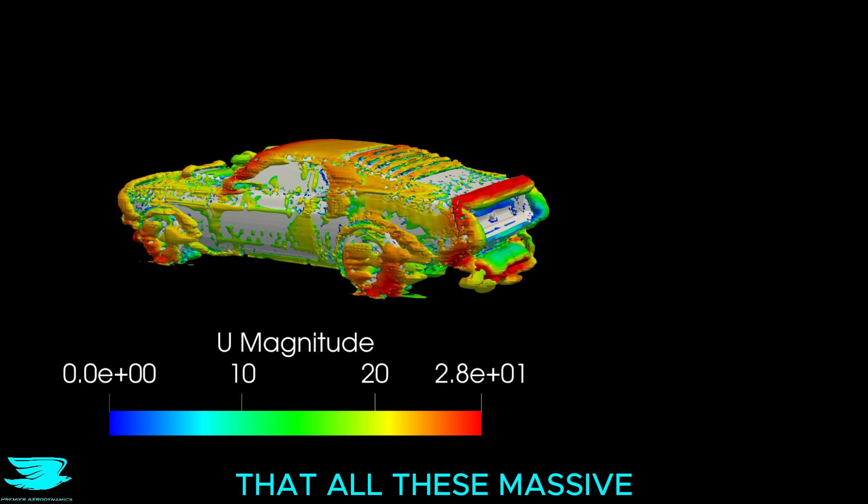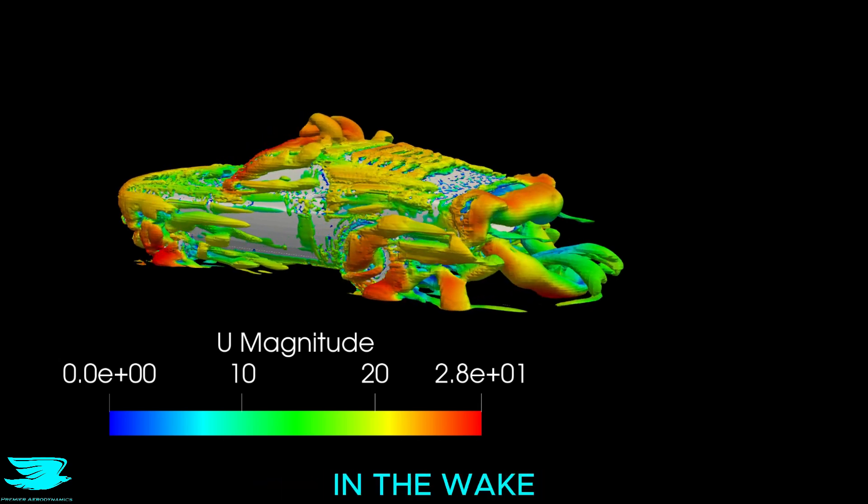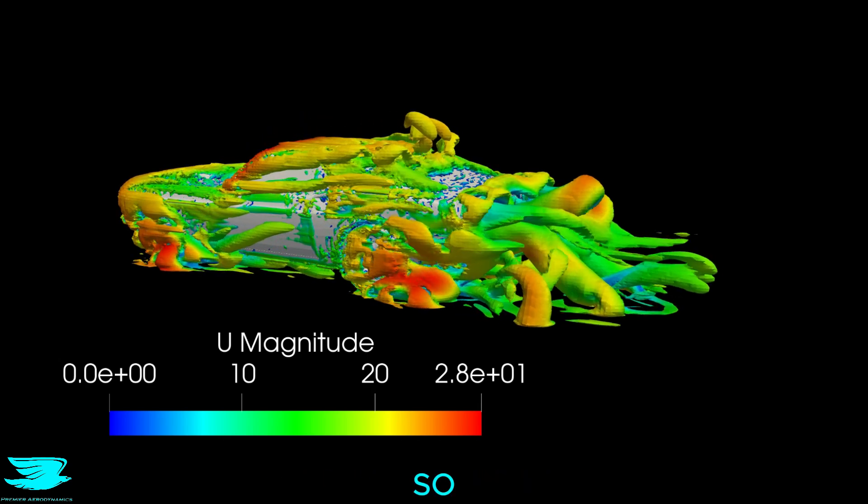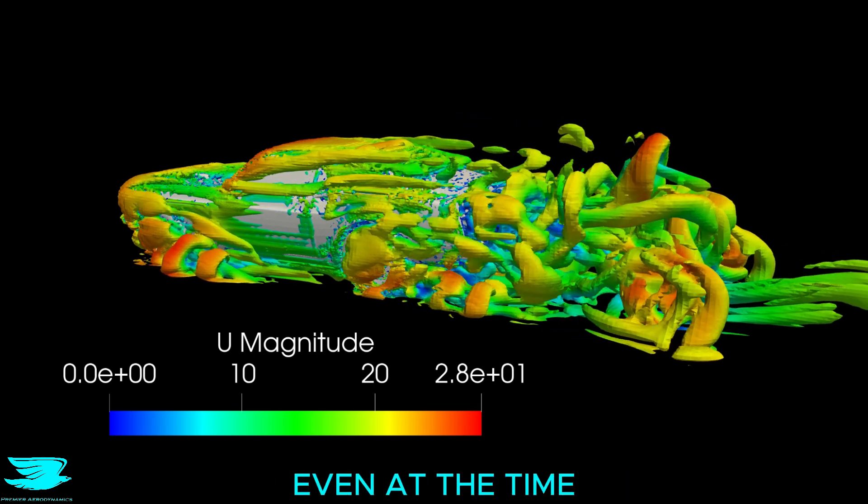This video shows that all of these massive vortex structures occur not just in the wake, but really all over the car. So this car has a lot more vortex drag than a regular car, even at the time.